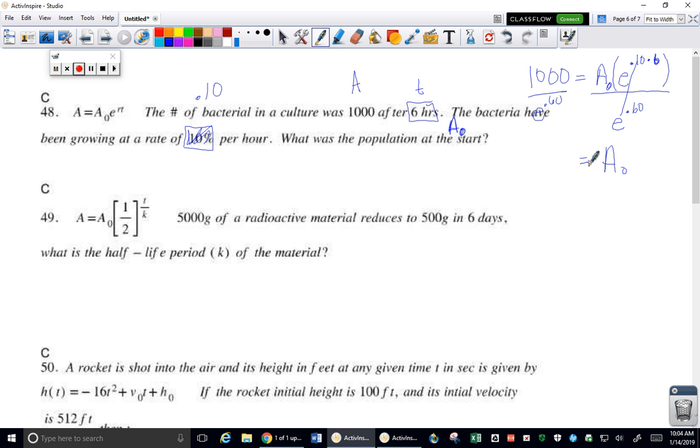So divide 1,000 by E to the .60. And that should give you exactly what your population started at, approximately, of course.